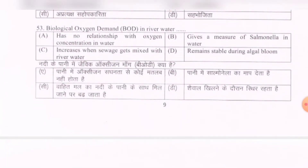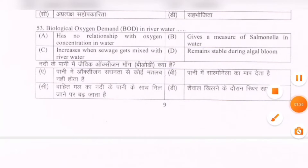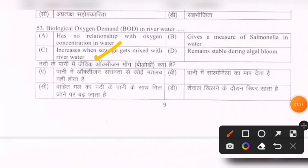Next question: Biological Oxygen Demand (BOD) in river water — which statement is correct? Options are: has no relationship with oxygen concentration in water; gives a measure of salmonella in water; increases when sewage waste gets mixed with river water; remains stable during algal bloom. The correct option is C — BOD increases when sewage waste gets mixed with river water.